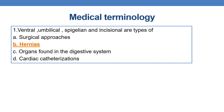Coming to the first question: ventral, umbilical, spigelian, and incisional are types of what? Option A is surgical procedures. Option B is hernias. Option C is organs found in the digestive system, and option D is cardiac catheterizations. Ventral, umbilical, spigelian, and incisional are types of hernias, so the correct answer is option B.